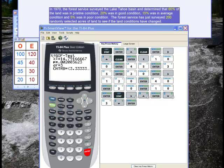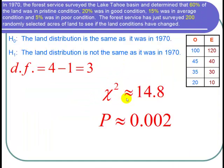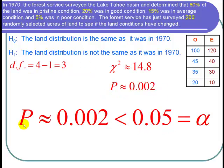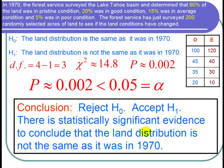Let's go back to the PowerPoint. The calculator gave us that the chi-squared was about 14.8 and the p-value was about 0.002. Let's use a level of significance of 0.05. Almost anything will work since this is such a small p-value. We can see that the p-value of 0.002 is less than the level of significance of 0.05. When the p-value is less than the level of significance, we reject the null hypothesis and accept the alternative hypothesis. We can conclude that there is statistically significant evidence that the land distribution is not the same as it was in 1970.